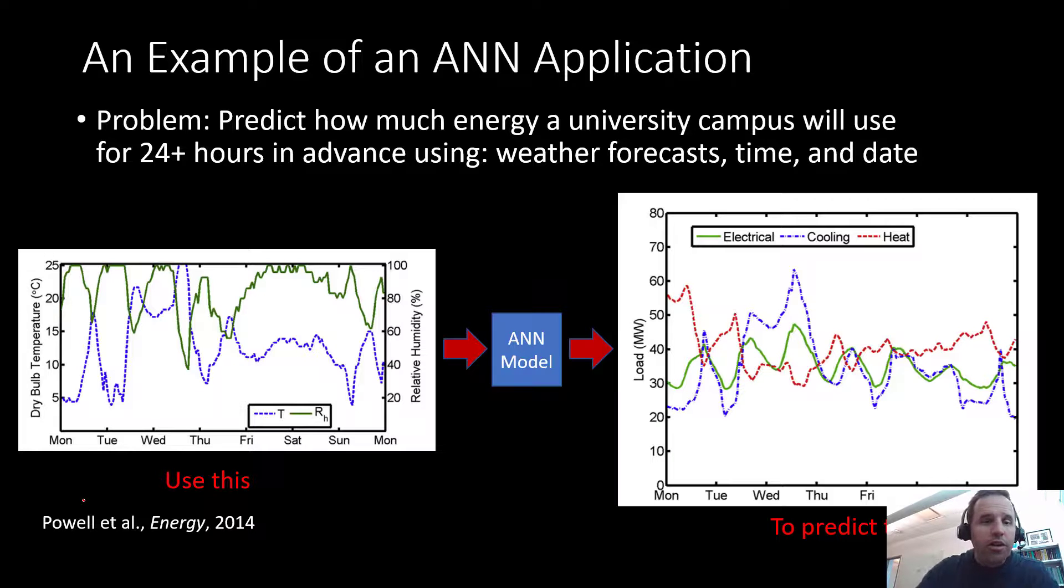Just an example of a neural network. So here's some input data. This is relative humidity in green and this is temperature in the dashed blue. We want to try, in this particular example, we want to try and predict how much energy is required for a set of buildings. And this was from a university campus. So specifically we are trying to predict the electrical load or the electrical demand, the cooling load or cooling demand, and the heating load for a large university campus. The data that we have available to us is the weather, but we also have time and date.